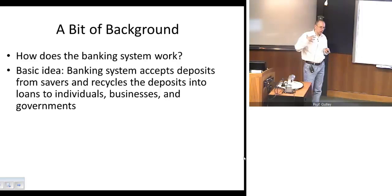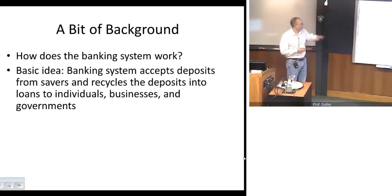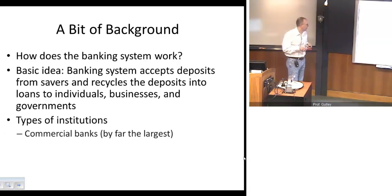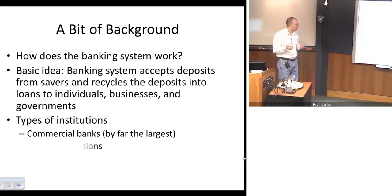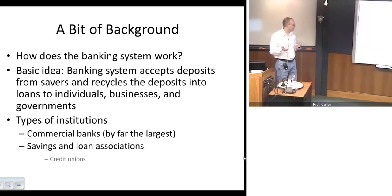So, basic background. What we want to get across here is to think about how the banking system operates. A standard bank accepts deposits from folks like us. They then take those deposits, aggregate them together, and then lend them out to other consumers, businesses, and sometimes governments. Banks collect deposits and they make loans. And that process of collecting deposits and making loans is very important for our money supply creation process. Our types of institutions: we have commercial banks, which are by far the largest. We have savings and loan associations. They're somewhat smaller. And then we have credit unions, which are much smaller still.